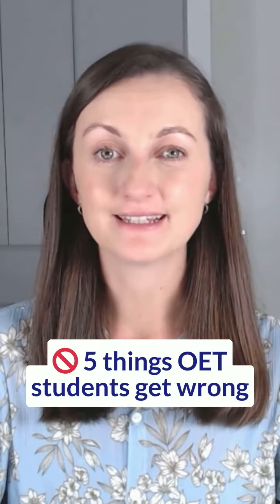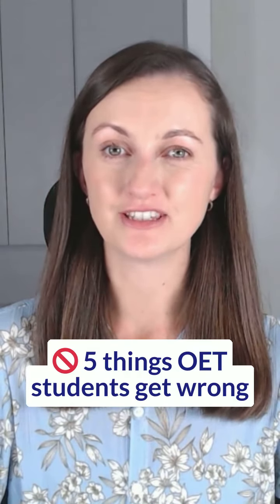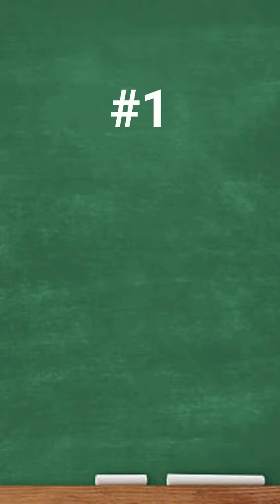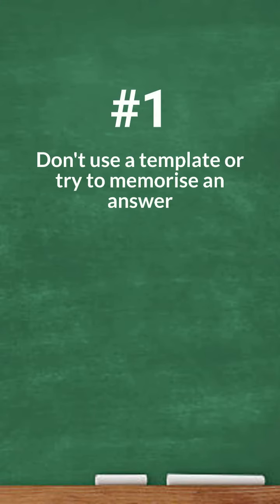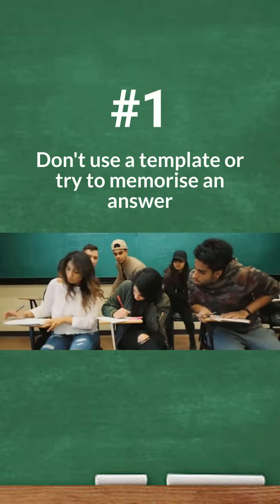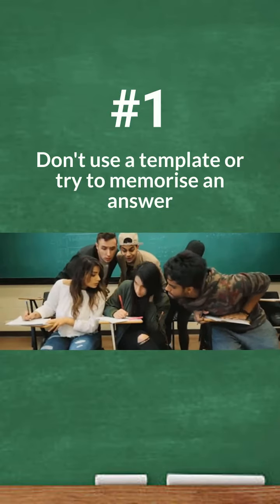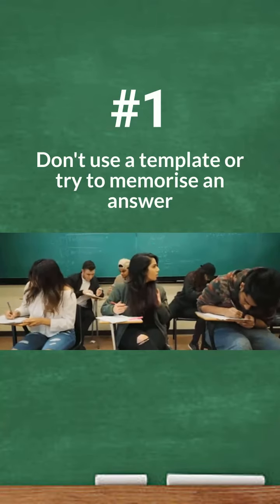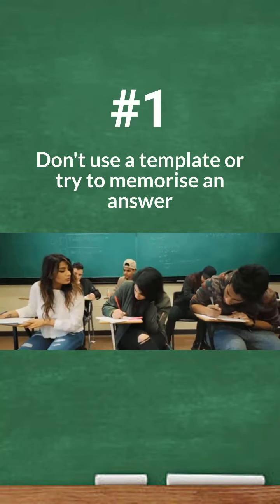Here are five things many OET students get wrong. Number one: do not use a template or try to memorize an answer. Remember there are no shortcuts in OET, so using a template or memorizing set answers is not going to get you the grades that you need.